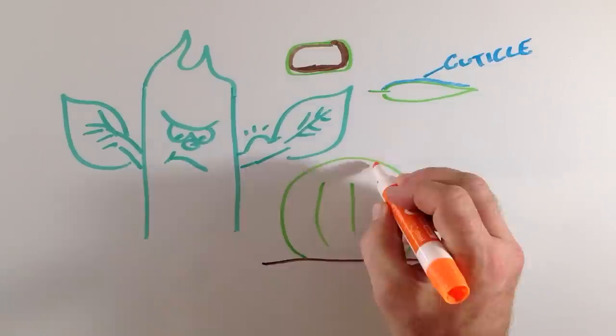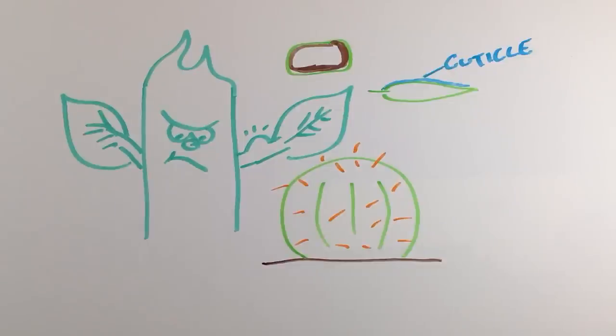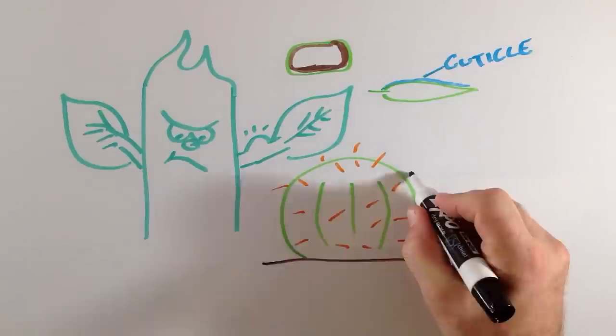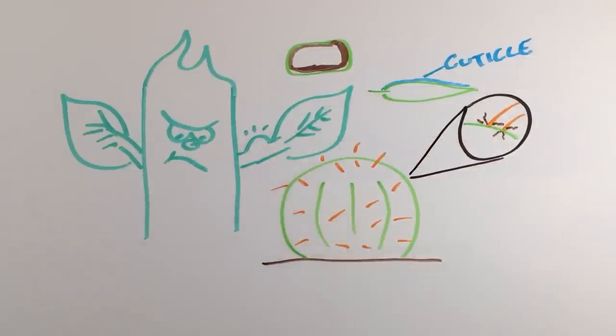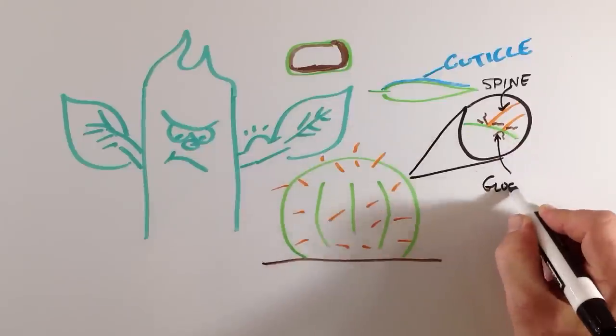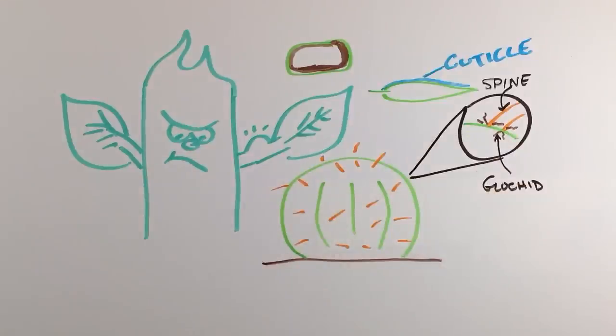Of course, the masters of mechanical defenses are cacti. Their bodies are covered with highly modified leaves called spines, as well as other smaller, more painful prickles called glochids. Plants typically use modifications of hairs all over their body as a very effective defense against herbivory.